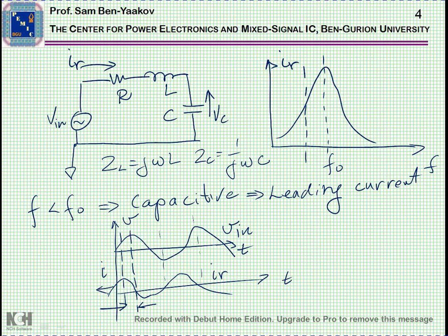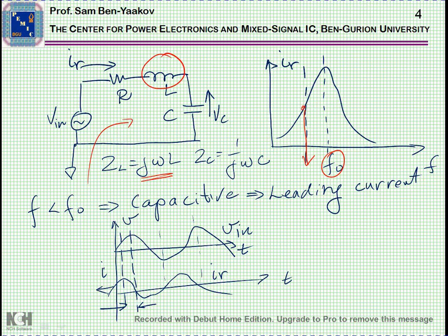If we operate at a frequency below the resonant frequency, the circuit will look capacitive. The reason is that at low frequency the impedance of the inductor is low — as we go to lower and lower frequencies the impedance becomes smaller and smaller, so when we look into the circuit we see a capacitive nature. In this case the current will be leading; that is, the current is coming before the voltage. Here is the peak of the excitation voltage, and here is the peak of the current — this phase is the leading phase, so the current comes a little bit earlier.